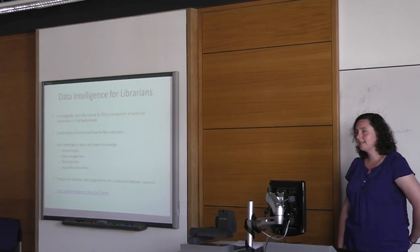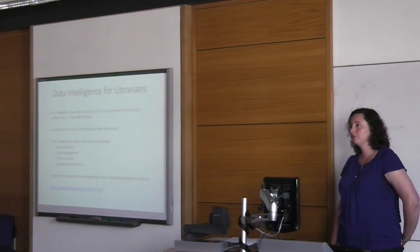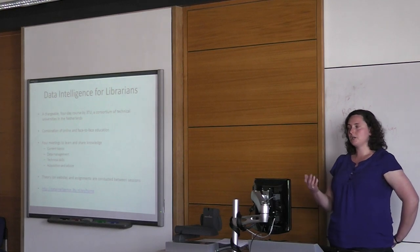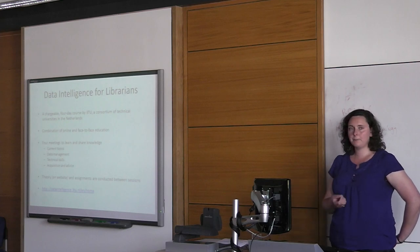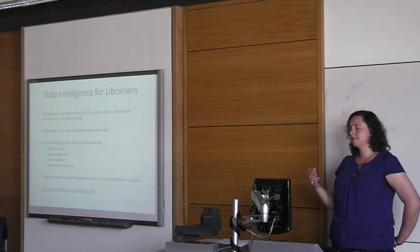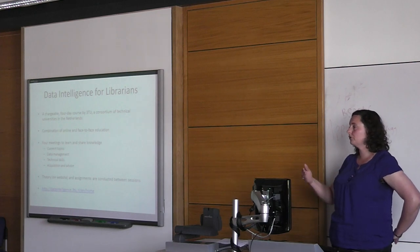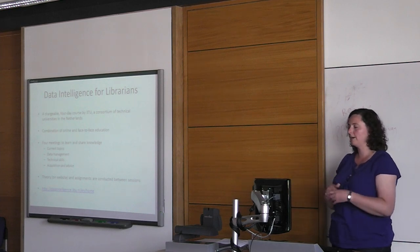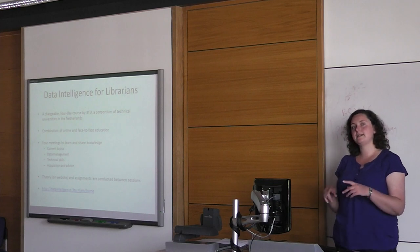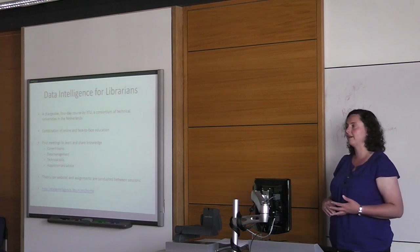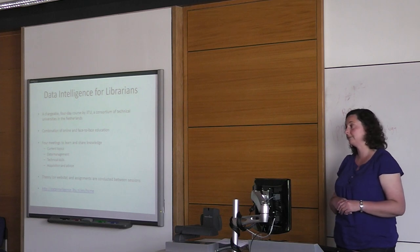Data Intelligence for Librarians is a four-day course run by 3TU, a consortium of technical universities in the Netherlands. It's like a summer school — a chargeable course at about 100 euros — combining online learning and face-to-face sessions. Participants meet to discuss topics, with theory on the website and assignments done in pairs, either in their own time or between sessions. There's more of a focus on the repository and technical side, covering technical skills, acquisition, and advice, reflecting the consortium's data library background.